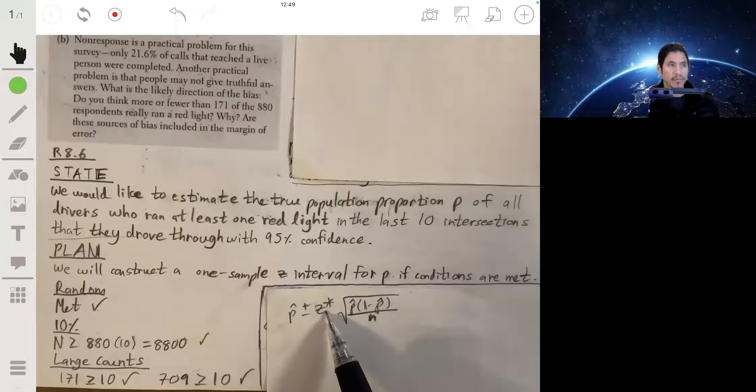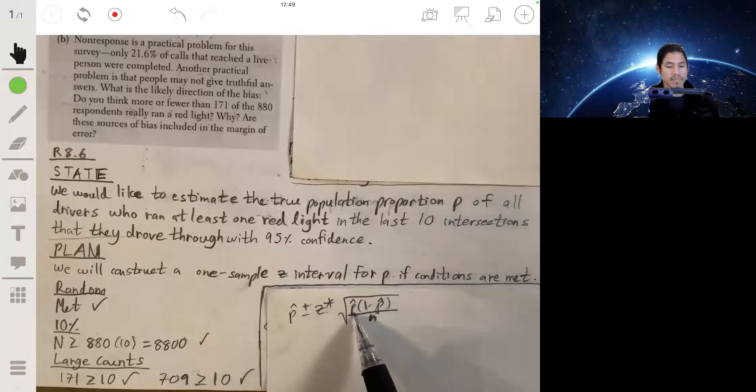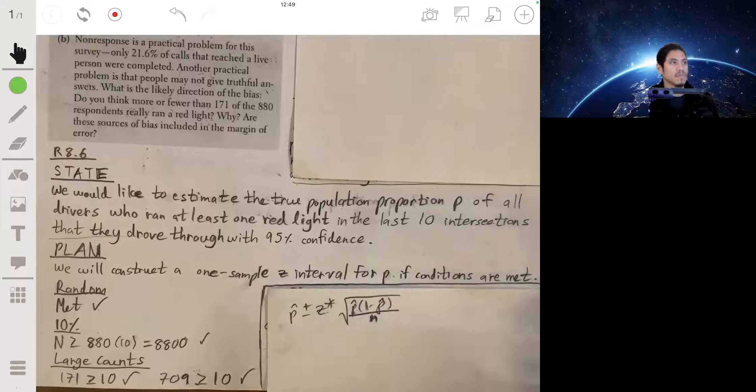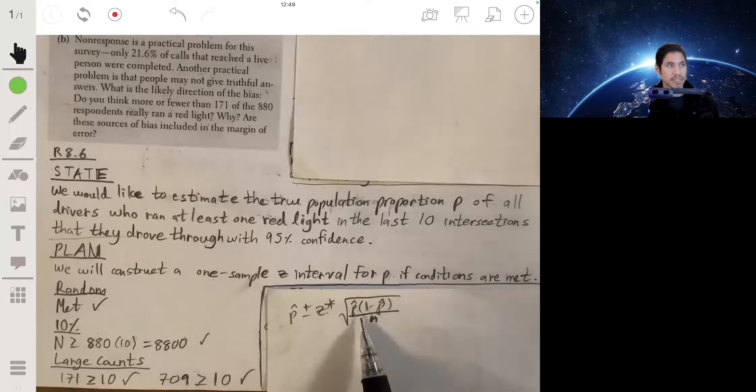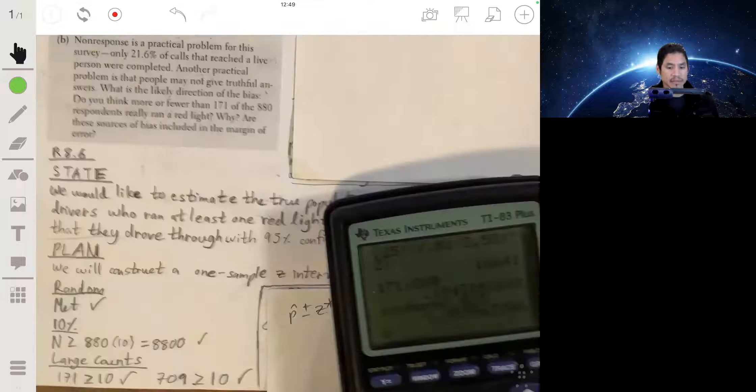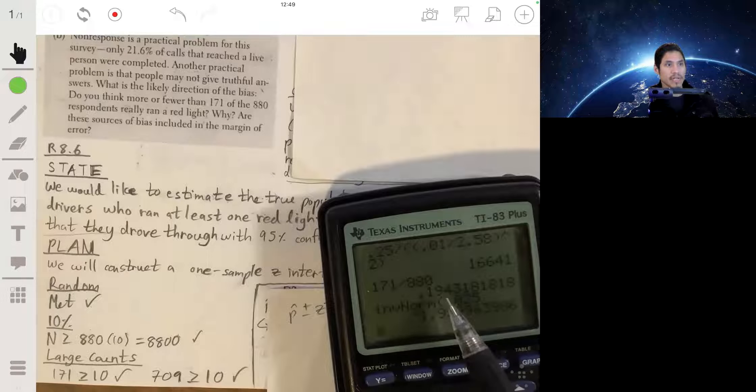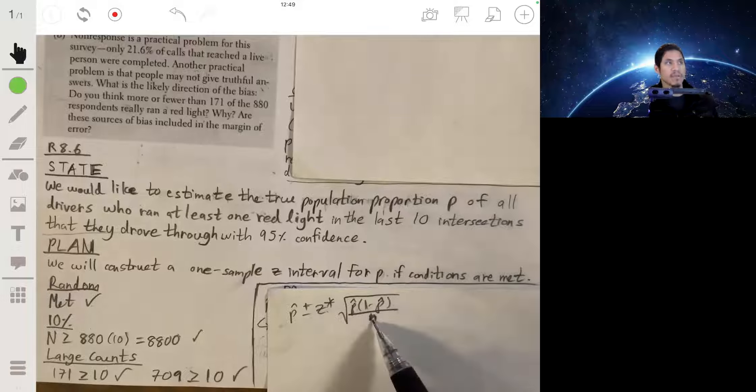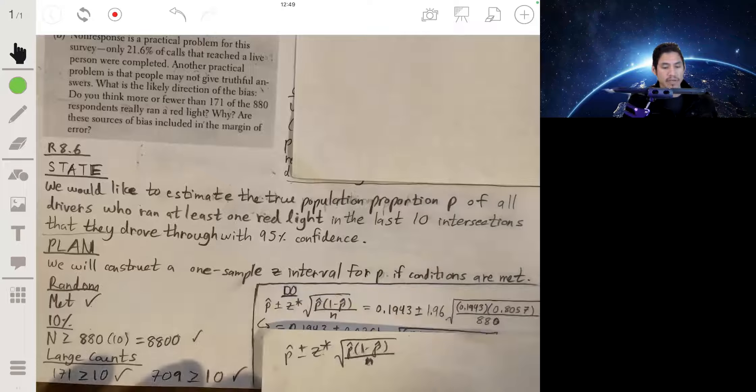So we'll have 1.96 as the z star, and then we have again our population proportion which is 171 divided by 880, and then we do 1 minus that, so 1 minus the 0.1943. The n is going to be 880, so it comes out to this.